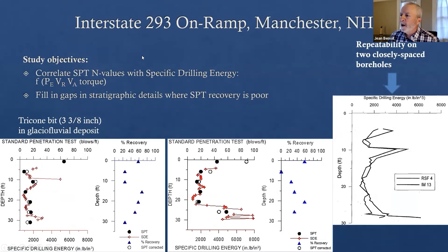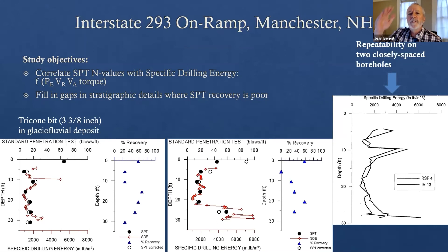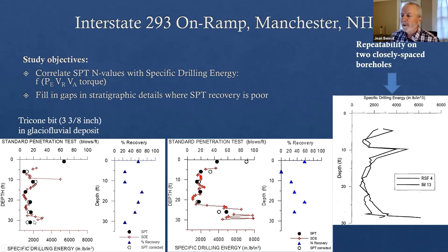We did another project in Brookline, with the idea of reducing the number of SPT boreholes. We did a number of boreholes where we would do SPT, then drill between the next SPT tests in an SPT-drill-SPT-drill pattern. We found that taking the water pressure divided by the thrust gave values indicative of various types of soil — you can create your own compound parameter. The specific drilling energy trend was very similar to the SPT N-values, even in a glacial fluvial deposit — very bony, variable material that's difficult to sample using the SPT. With MWD you get information in between, giving much more confidence in your data and filling in the gaps.